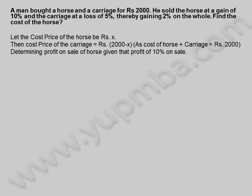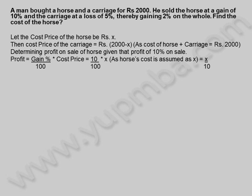Determining profit on sale of horse given that profit of 10% on sale. Profit is equal to gain percentage divided by 100 into cost price, which is equal to 10 by 100 into X, as horse's cost is assumed as X, which equals X by 10.